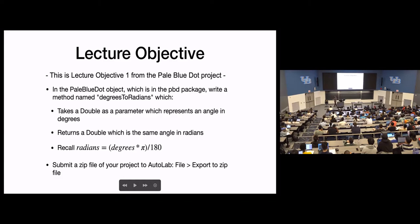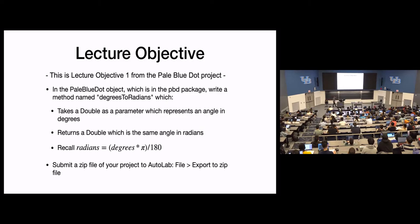Lecture objective one is converting degrees to radians. There's no tricks with this one. The radians is going to be the degrees — whatever the input is — multiplied by pi and divided by 180. Just in case you're misremembering the formula, there's the equation. You'll get degrees as an input, multiply it by pi, divide it by 180, and return that thing. That's all you need to do for that one.